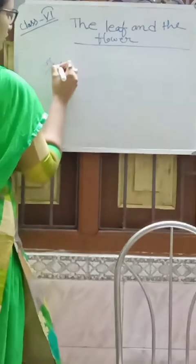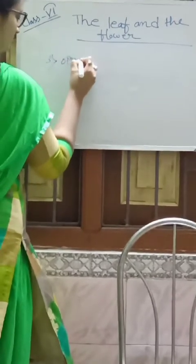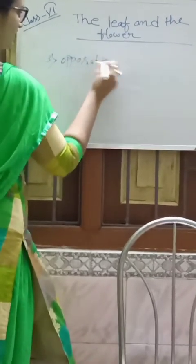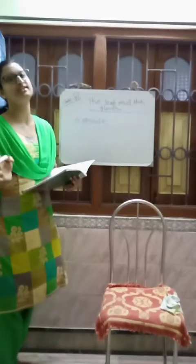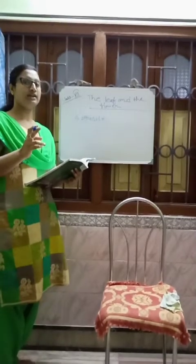The third arrangement is the opposite arrangement. What is opposite arrangement? In this kind of arrangement, two leaves arise opposite to each other — not alternately, but directly opposite to each other.